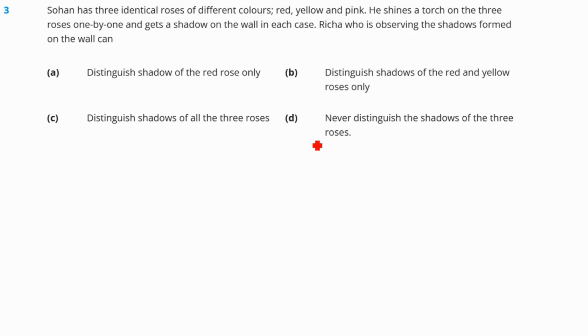Question 3. Sohan has three identical roses of different colors, red, yellow and pink. He shines a torch on the three roses one by one and gets a shadow on the wall in each case. Richa who is observing the shadow formed on the wall can. Shadows are always black in color, no matter what color of dress you are wearing or what color of rose it is. Richa's observation will be that she cannot distinguish the shadows of the roses because all are black in color.